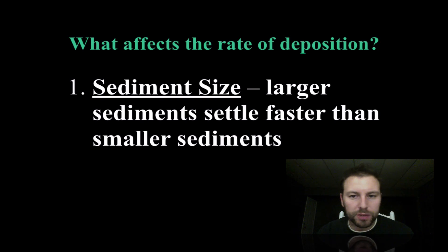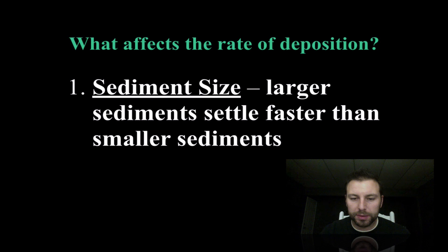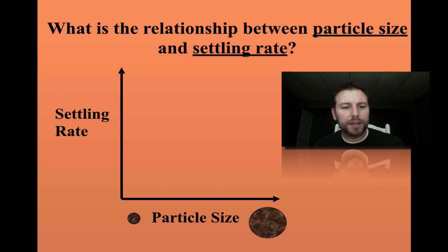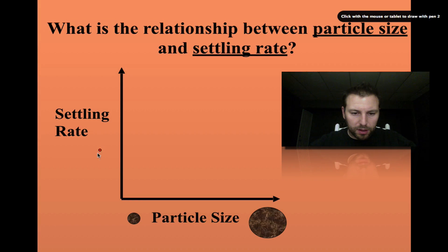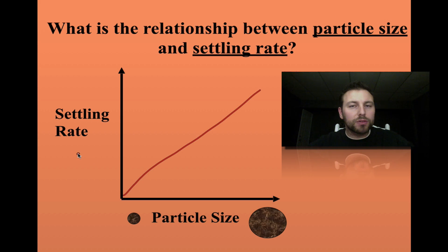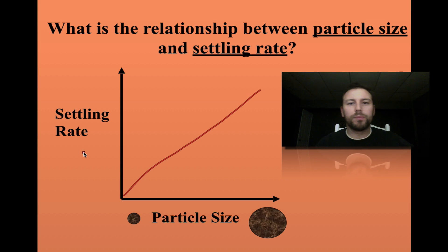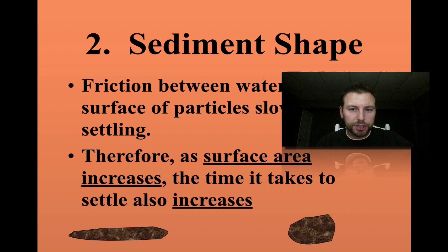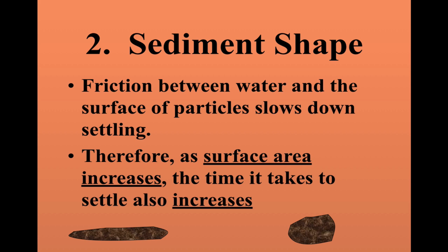What affects the rate of deposition? First, sediment size: larger sediments settle faster than smaller sediments. If we graph the relationship between particle size and settling rate, going from small to large, the settling rate increases — a direct relationship. A higher settling rate means it's happening faster, like going 80 miles per hour versus 10.